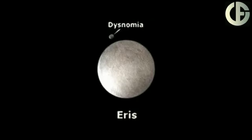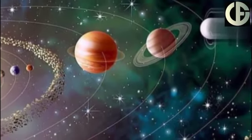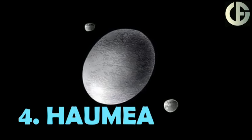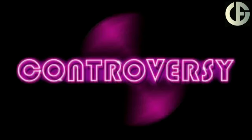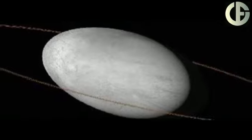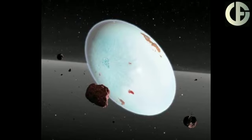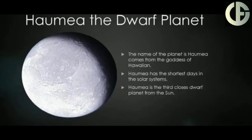Fourthly, Haumea. Its discovery was very controversial. It is the brightest dwarf planet and possesses a ring system. It has achieved hydrostatic equilibrium and is a notable dwarf planet for the large amount of water ice on its surface. It has one of the shortest days in the entire solar system. Haumea's high speed squishes it into a shape like a rugby ball.